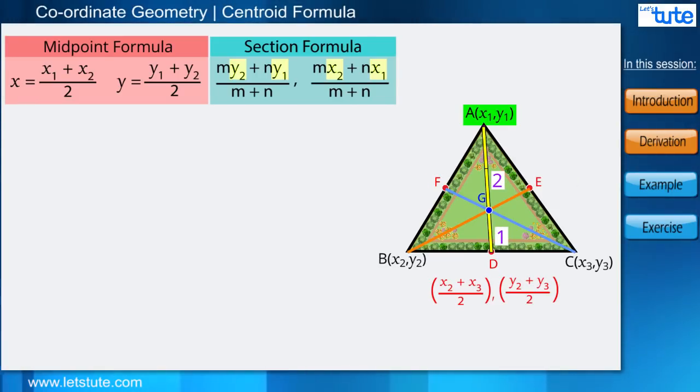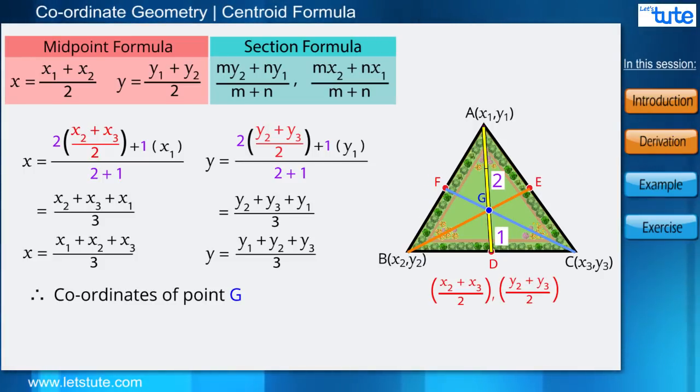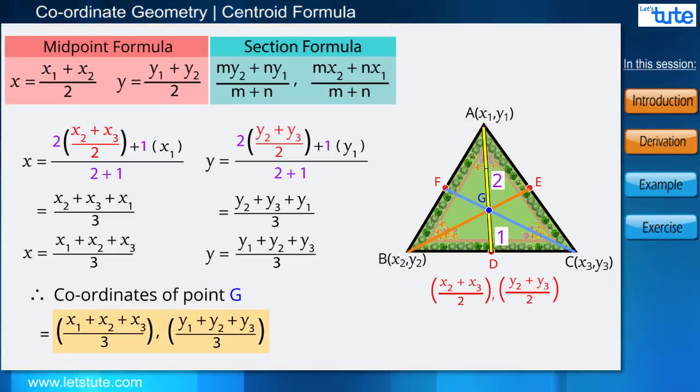G, which is the centroid of the garden, will be (x1 + x2 + x3)/3, (y1 + y2 + y3)/3. And this is our centroid formula.